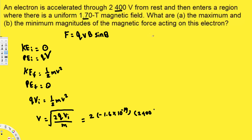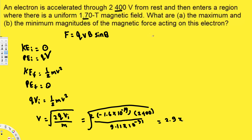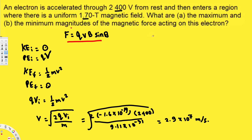Dividing by the mass of the electron, 9.11×10⁻³¹, and taking the square root, we get v = 2.9×10⁷ meters per second. Now we have the velocity and can use the force equation. Before plugging in values, we need to identify when the force is maximum and minimum. The force is maximum when the velocity and magnetic field are perpendicular — at 90 degrees.